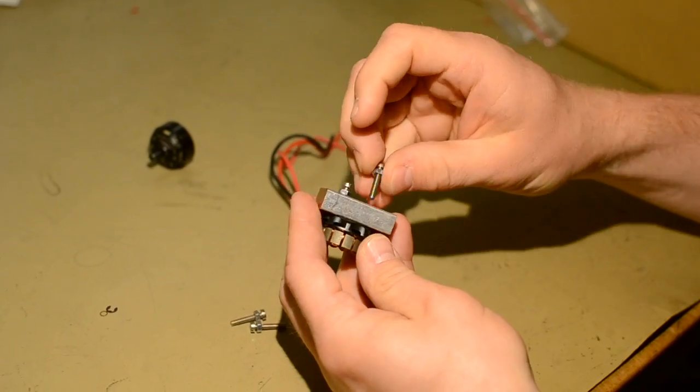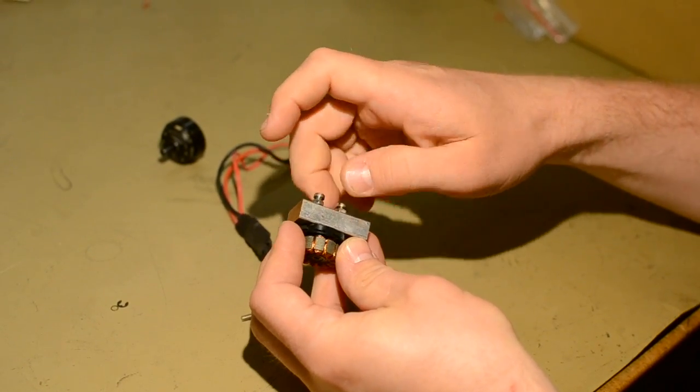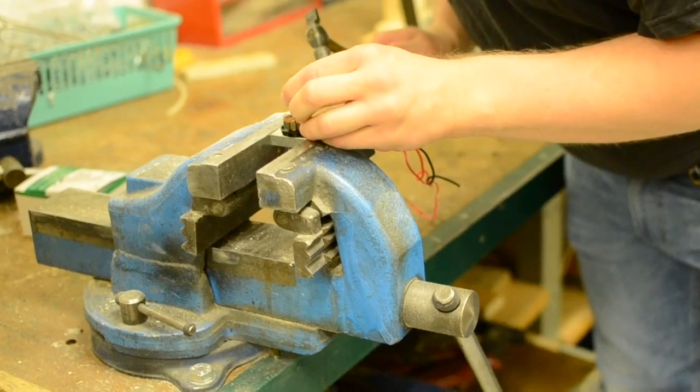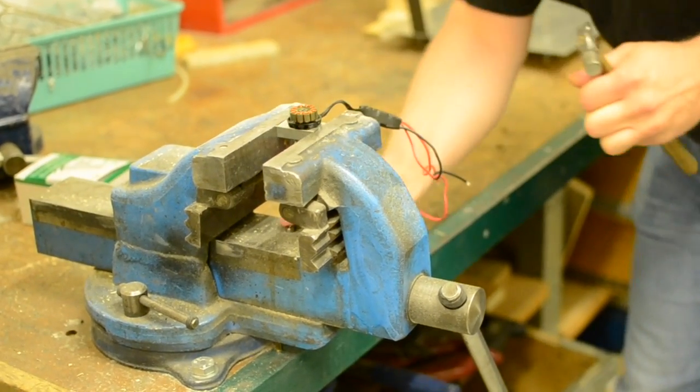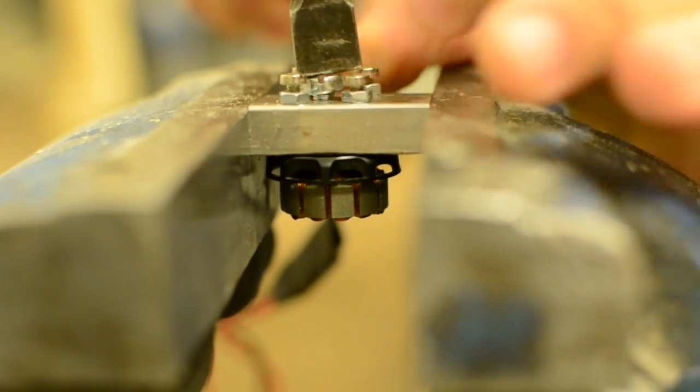For this, I made a motor holder so I could fasten it to a vise without crushing the case. Once it was in place, I used an undersized rod to get to the bottom bearing at an angle and hammered it out. Then I flipped the motor over and removed the other one.